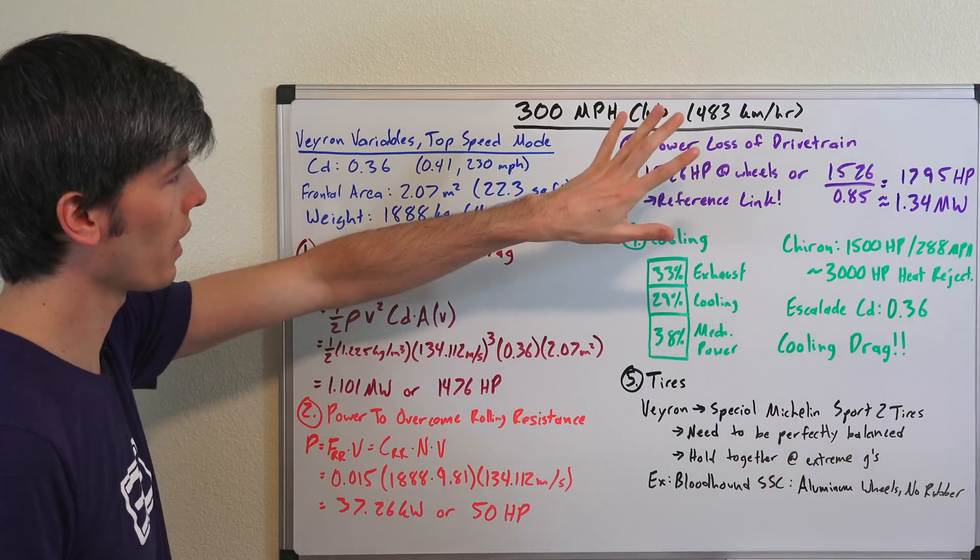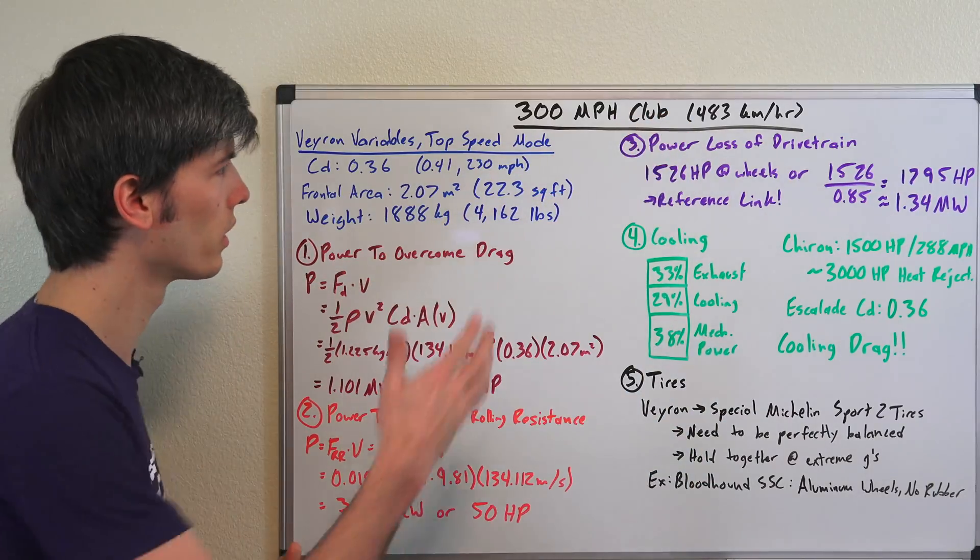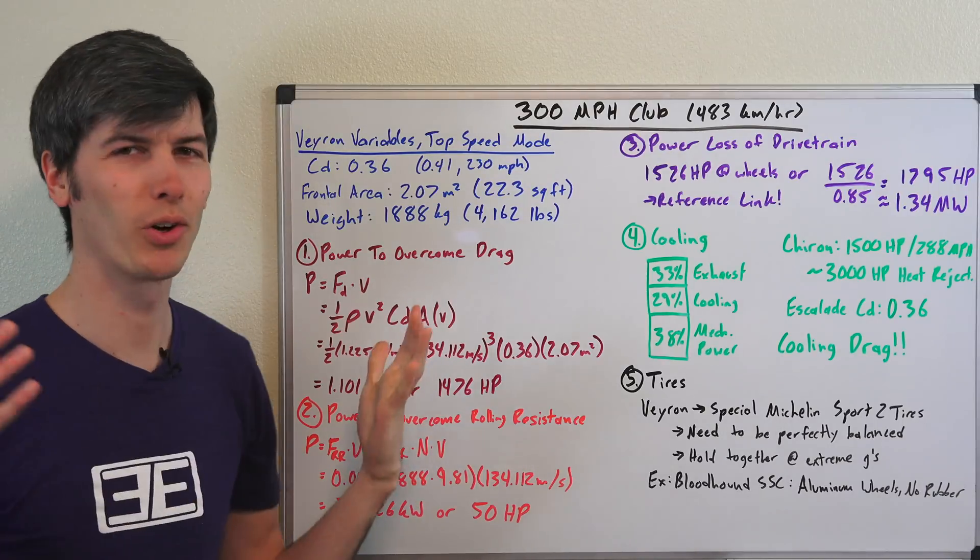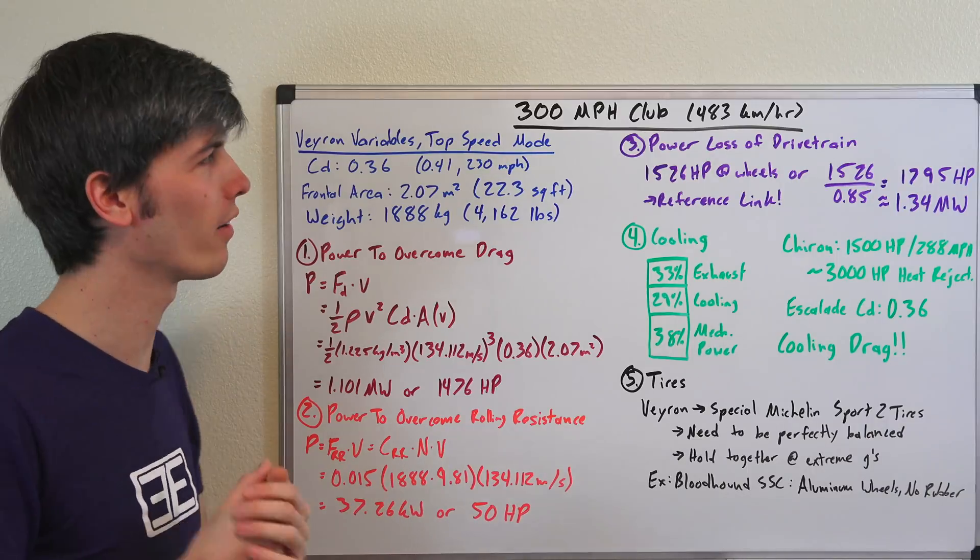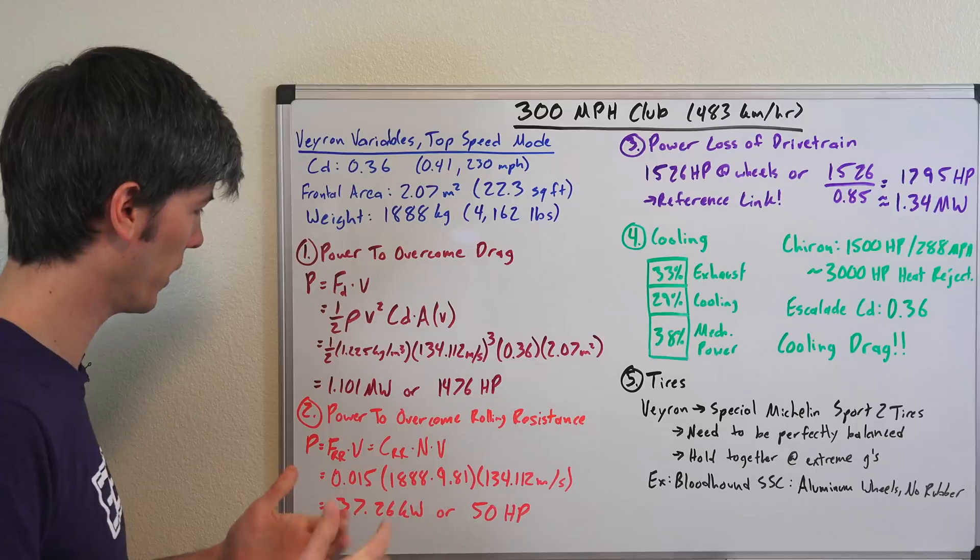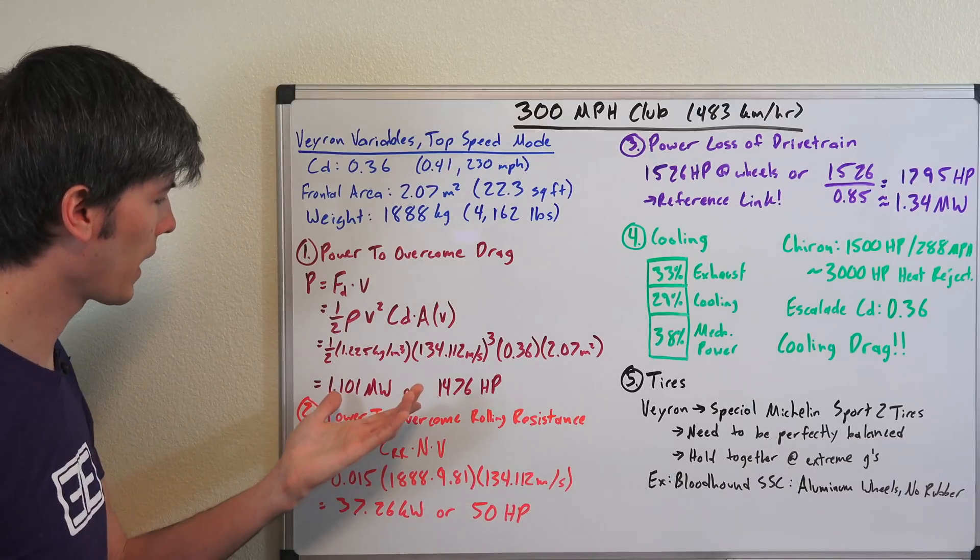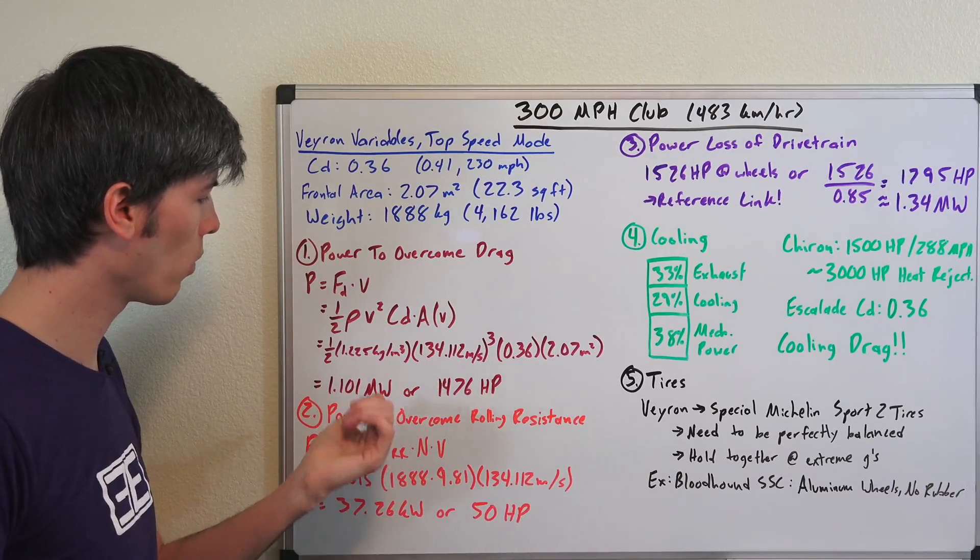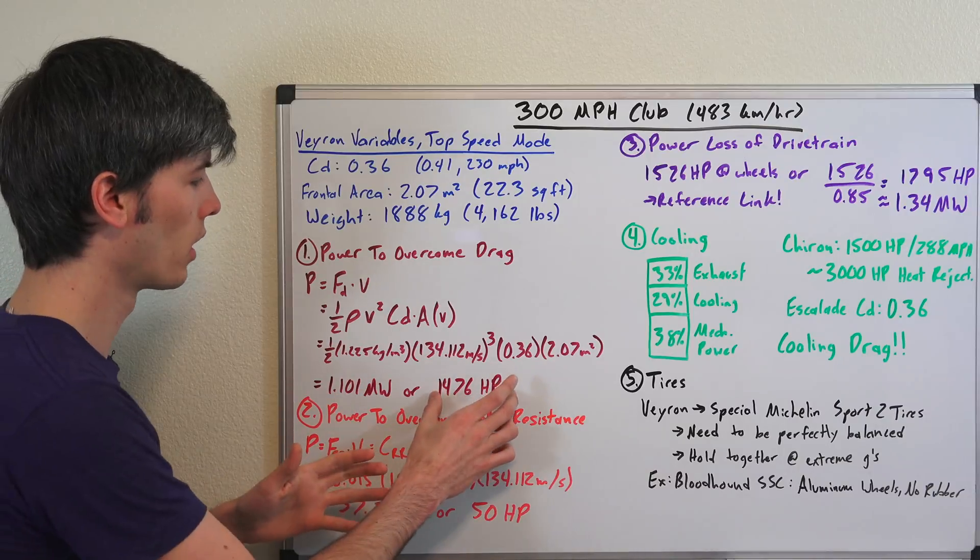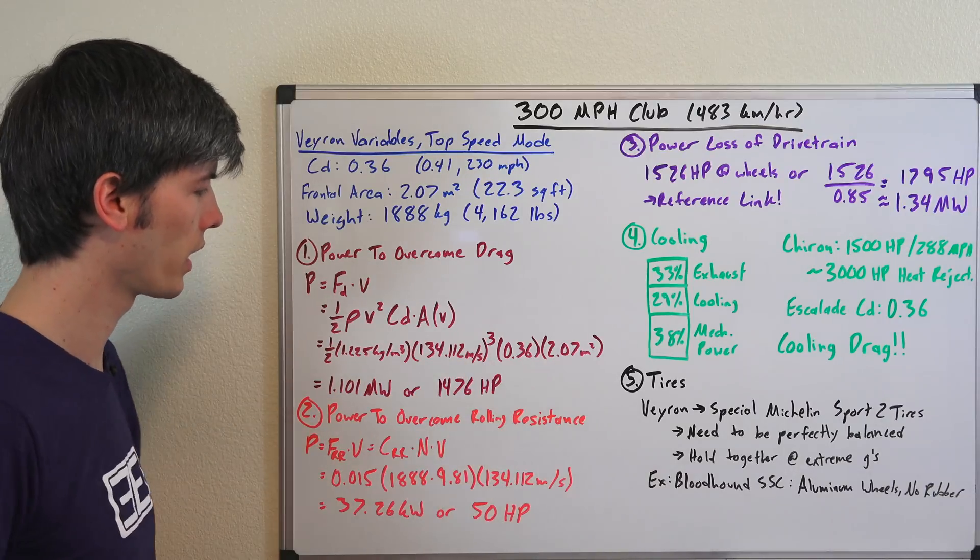Now you may also be wondering what's the equivalent of 300 mile per hour club on the metric system: 483. I'm sure a lot of you out there have wondered why has no car ever hit 483 kilometers per hour and that's what this video is about. So we do that math we get 1.101 megawatts or 1,476 horsepower, that's how much horsepower we will need just to overcome aerodynamic drag.